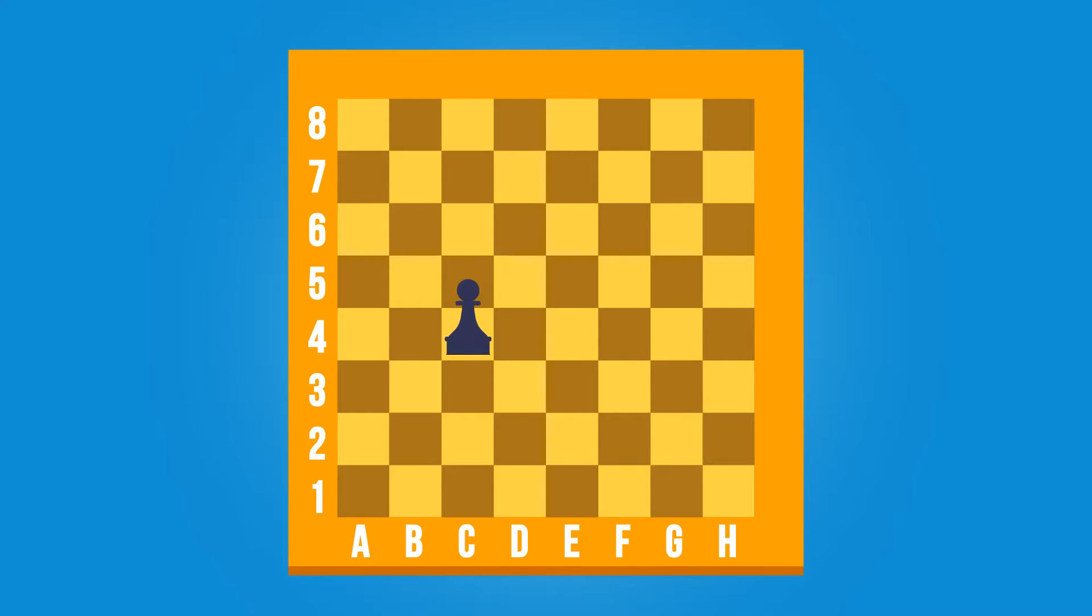For instance, if we are talking about this square over here, we notice first that it is on file C and on rank 3, so we say it is C3.